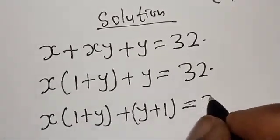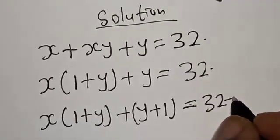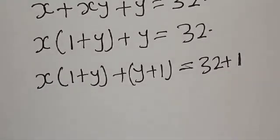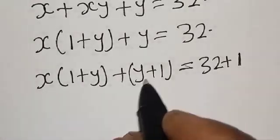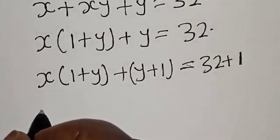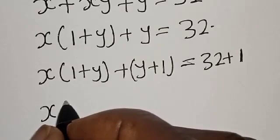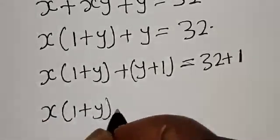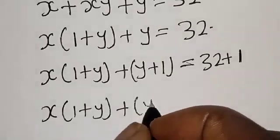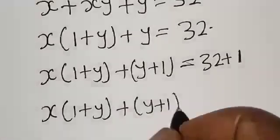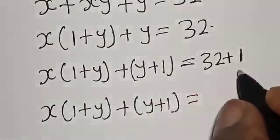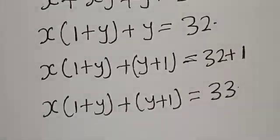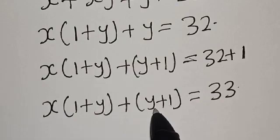That is x into one plus y, plus y plus one, is equal to 32 plus one. Now we have one plus y and one plus y. So x into one plus y plus y plus one is equal to 33.